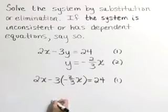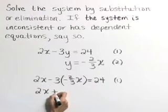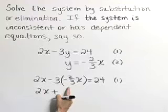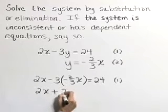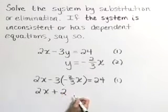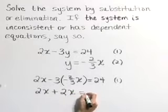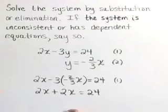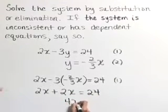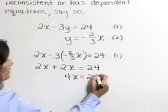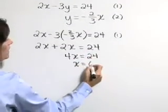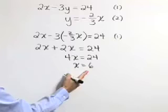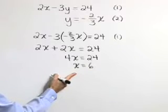Now let's solve for x. So 2x plus negative 3 times that negative 2 thirds is a positive 2. So that term becomes a plus 2x is equal to 24. Combining like terms, 4x is 24 or x is equal to 6.